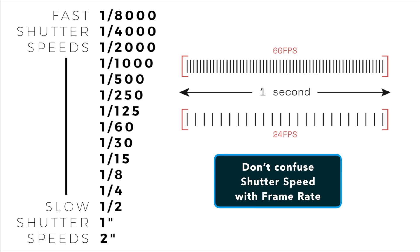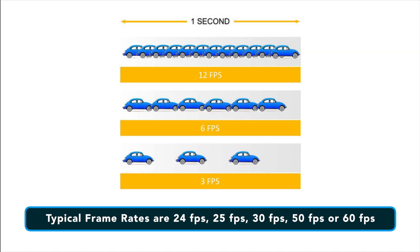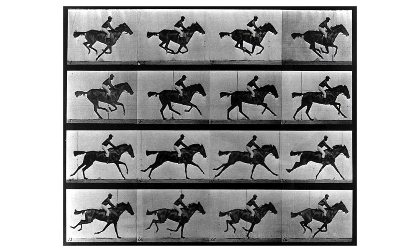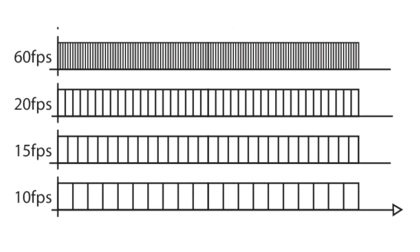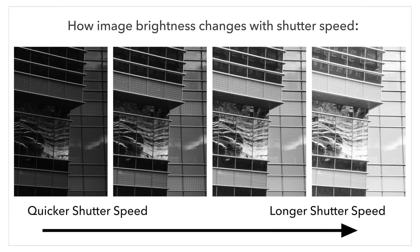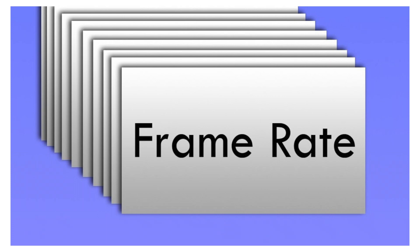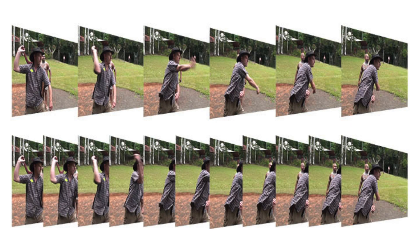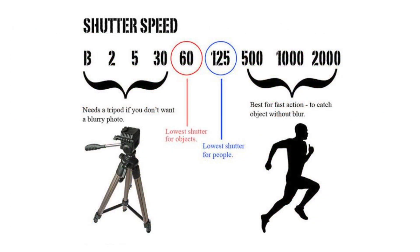Don't confuse shutter speed with frame rate because they're different things. When shooting video, your camera is recording a certain number of frames per second — this is usually 24, 25, 30, 50 or 60 frames per second. Technically, each of these frames is a still image and shown one after the other, they look like they're moving. Shutter speed is simply how long the aperture is open whenever it captures a frame. Shooting at 1/125th of a second doesn't mean you're shooting 125 frames per second — you're still shooting 30 frames per second, but each frame represents 1/125th of a second of exposure to light.